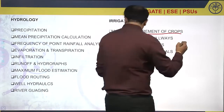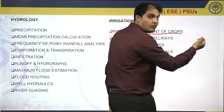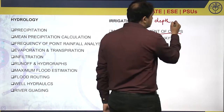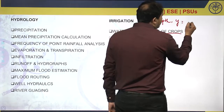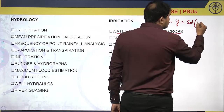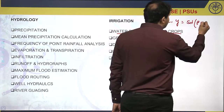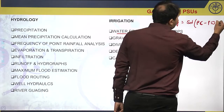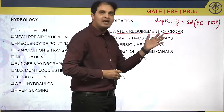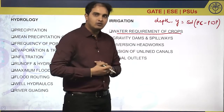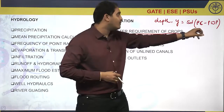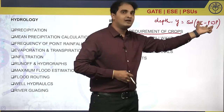The most important question is: how much is the depth of water available to the root zone? It is given by Y = S × D × (FC − PWP), where Y is the depth of water available to the root zone — the water available between field capacity and permanent wilting point.